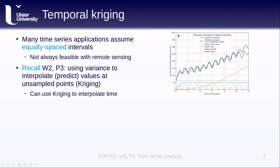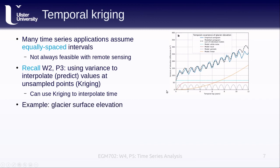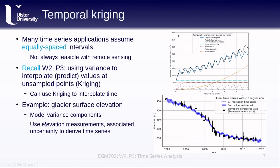Thinking back to week 2 lesson 3, we looked at using variance in a dataset to interpolate or predict values at unsampled points — a set of techniques lumped together under the label Kriging. We can also use Kriging to interpolate in time. We take the differences between whatever we're working with — in this case elevation over glaciers — plot the temporal lag, look at the variogram, and attempt to model the variogram as a number of different components, modeling the different variance components.